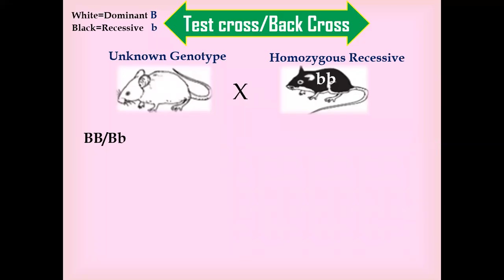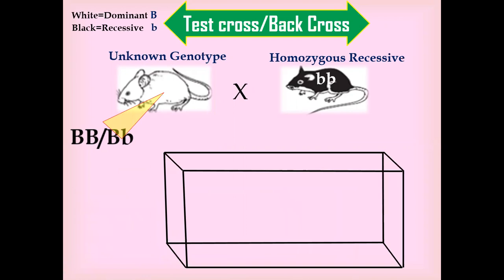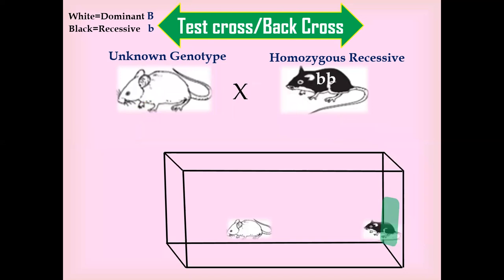The test cross or back cross is conducted to know the unknown genotype of a dominant trait. The unknown genotype is crossed with a homozygous recessive variety. To know the genotype of the unknown, which may be homozygous dominant or heterozygous with a capital B and lowercase b alleles, we put the homozygous recessive variety with the unknown genotype in one cage, either male or female.